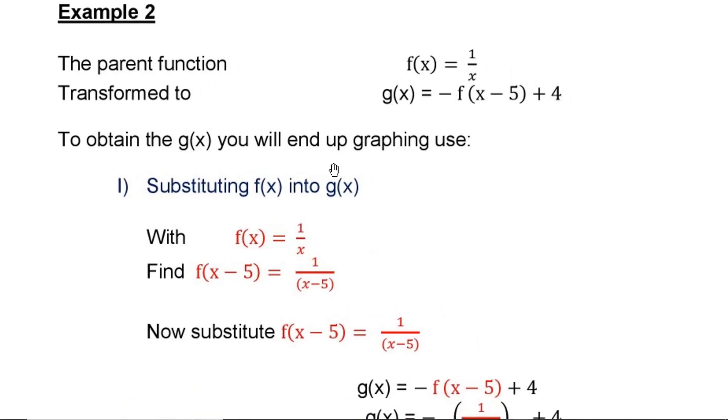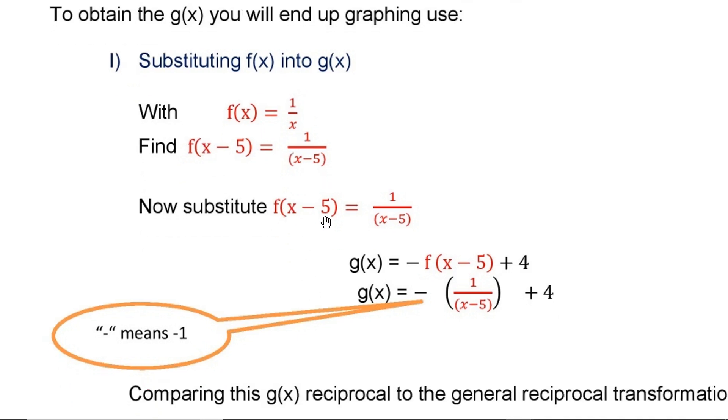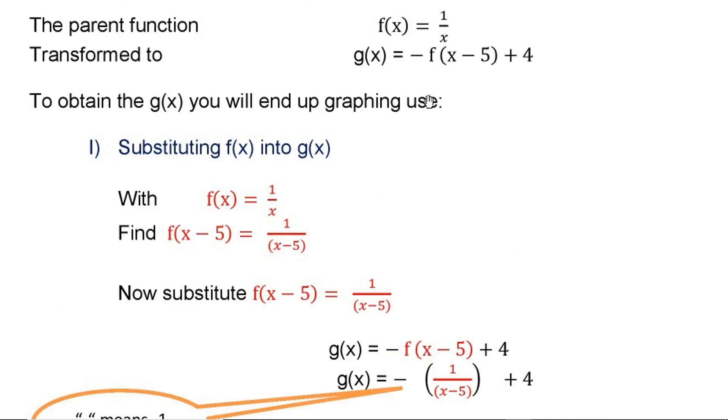Let us take another example. The parent function is 1/x and g(x) is -f(x-5) + 4. This is f(x). When we put (x-5), we have to put (x-5) here in order to replace this f(x-5). So f(x) is 1/x. We substitute f(x) into g(x). So f(x-5) simply means 1/(x-5). So we are substituting f(x-5) = 1/(x-5) here in this place.